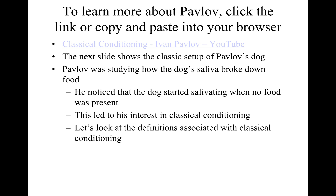The next slide shows the classic setup of Pavlov's dog. His basic research was on salivation and digestion, and the work on classical conditioning came from a phenomenon he observed — the dog started salivating when no food was present. He noticed it salivated when it heard the lab assistant getting the food ready, and that sparked his interest in classical conditioning.